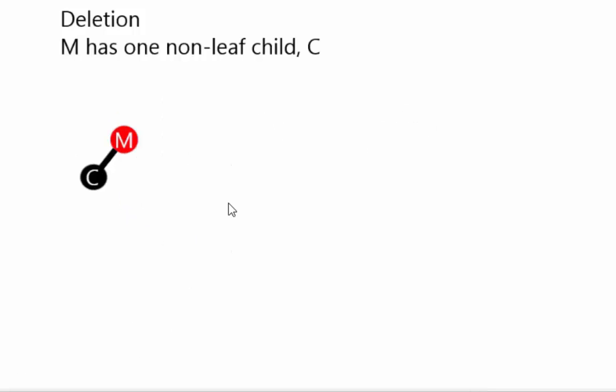More Wikipedia terminology. Let's take this thing that we're about to delete, M, and it has a child, C. C is the tree that's going to be moving into M's place.